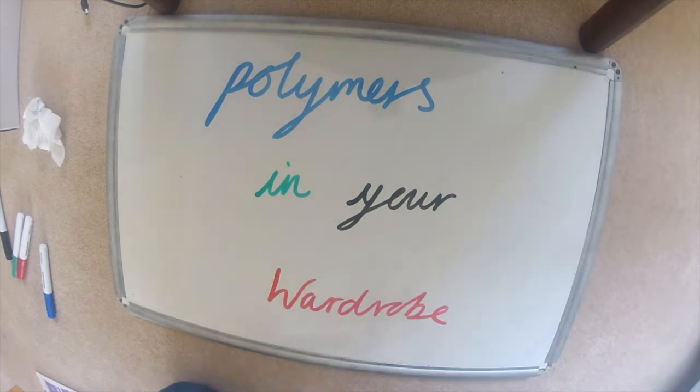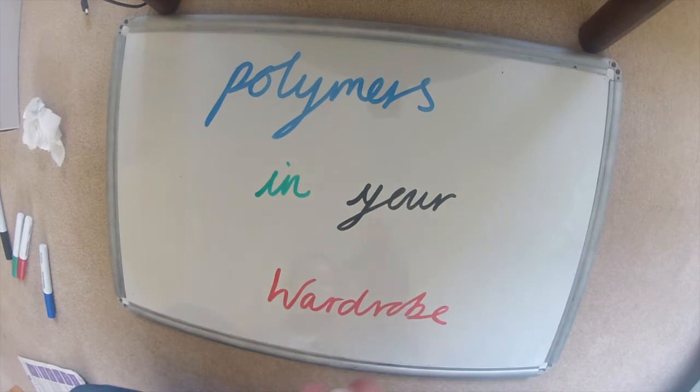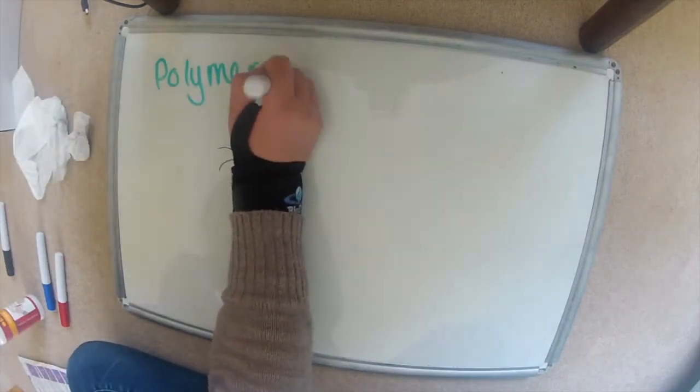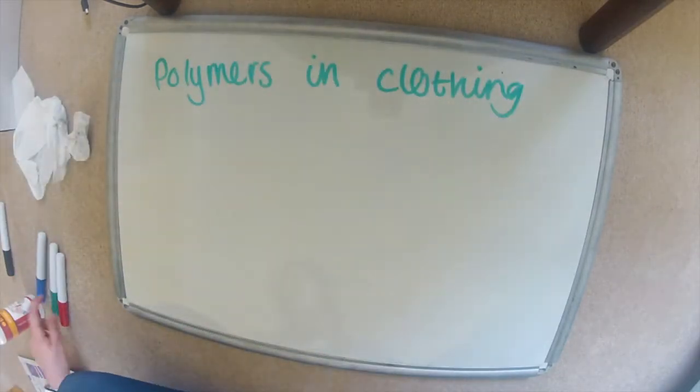Your wardrobe is full of polymers. There are natural polymers like cotton and wool, and there are synthetic polymers which we're going to look at now. So if you look in the labels of your clothing, these are the names you'll find of polymers.